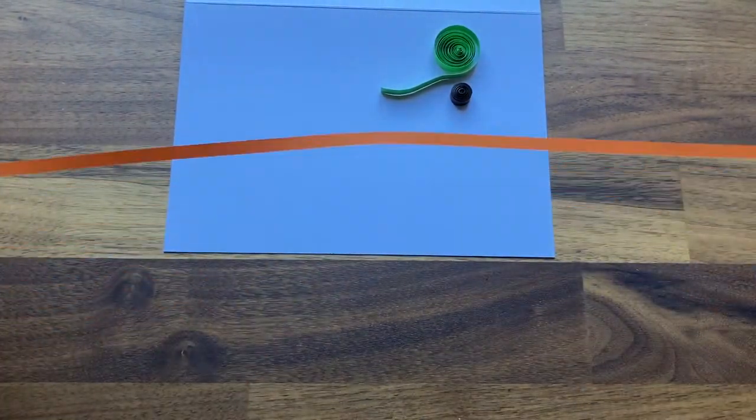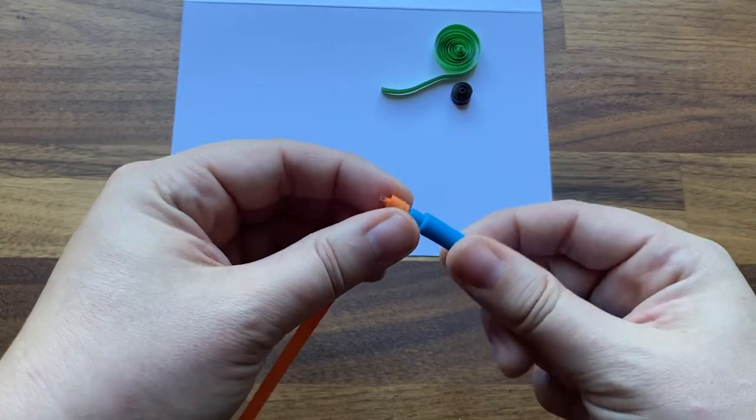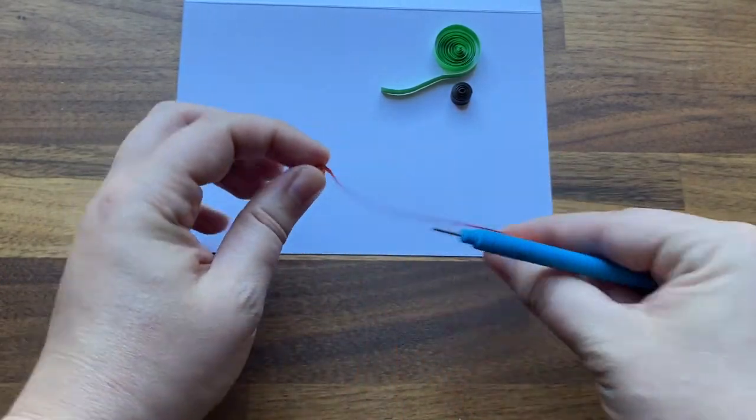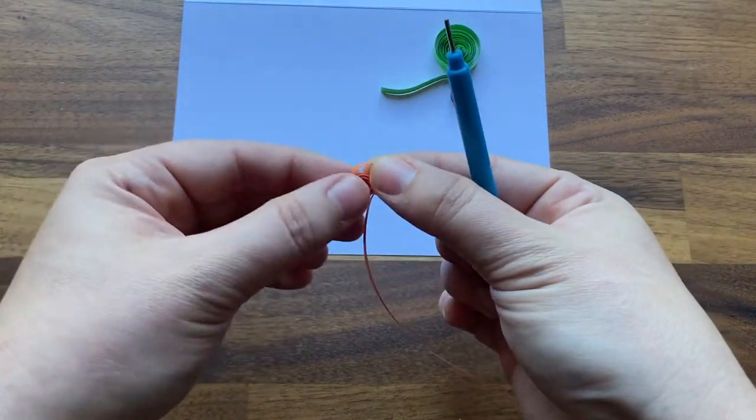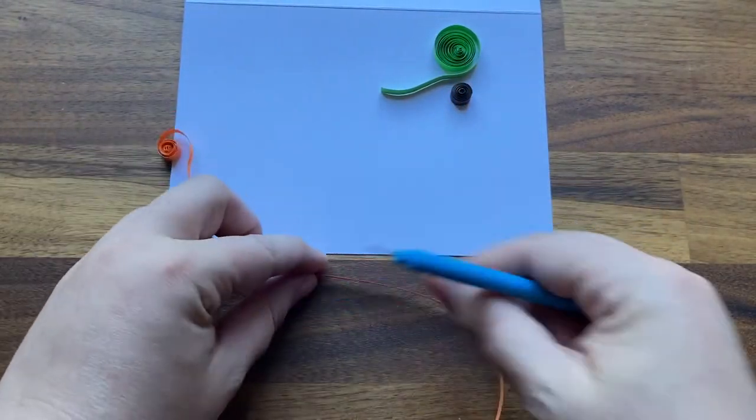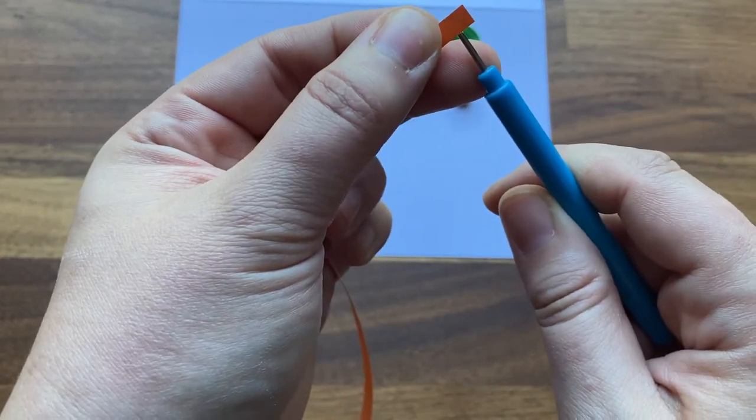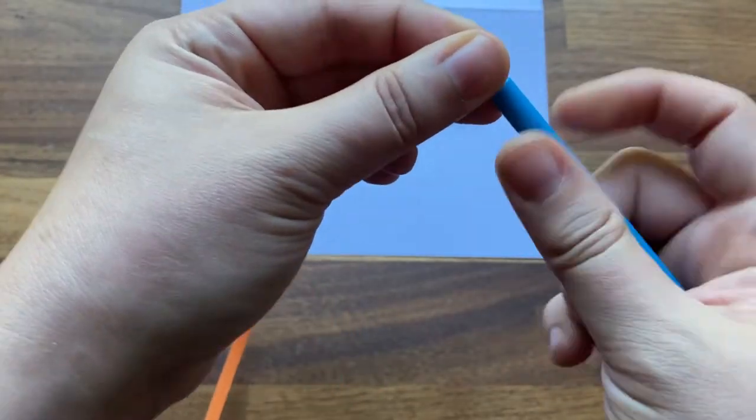Next, I'm going to make an S-shaped scroll. Roll about half of a piece of quilling paper, then remove from the tool. Then roll the other half of the quilling paper in the opposite direction.